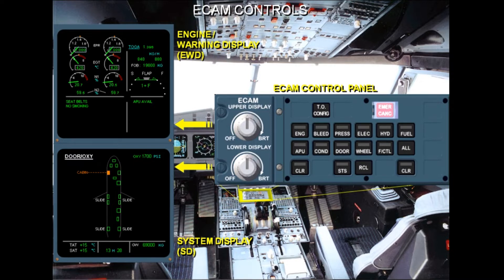The SD is divided into two areas. The upper part is used to display the various system pages — diagrams of the aircraft systems. The lower part is used to display permanent data.